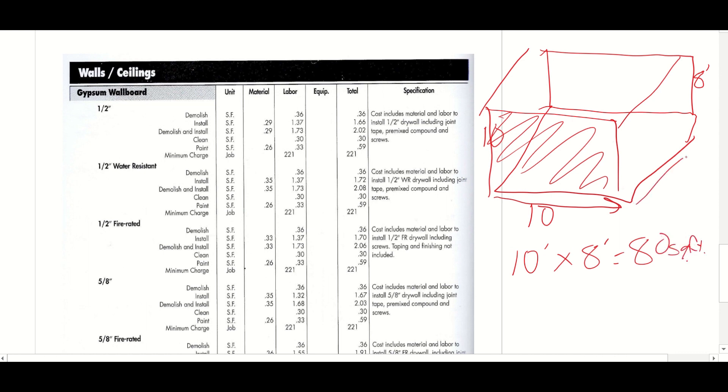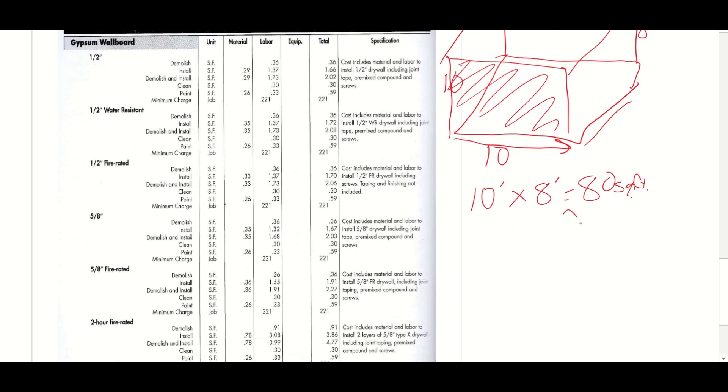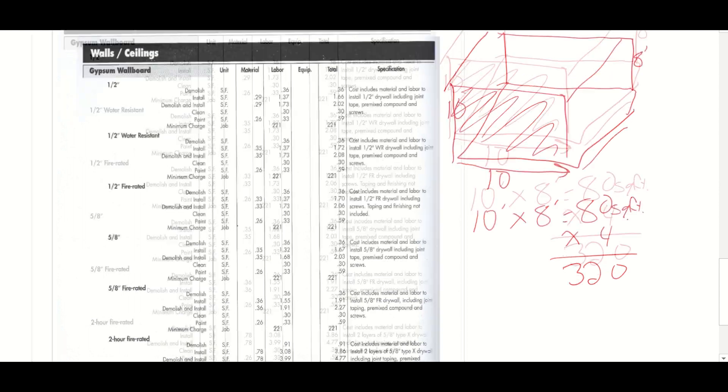And a wall is generally eight feet tall. So one wall is going to be 10 feet long. This wall right here is going to be 10 feet long by eight feet tall, which is going to be 80 square feet. That's one wall.